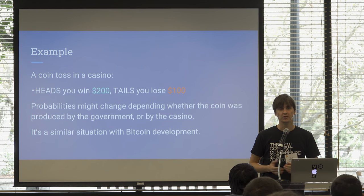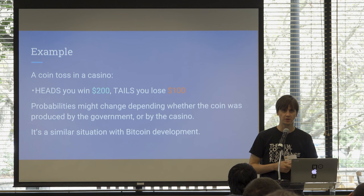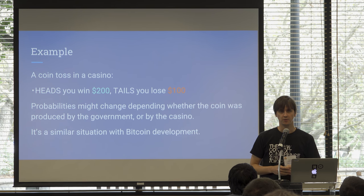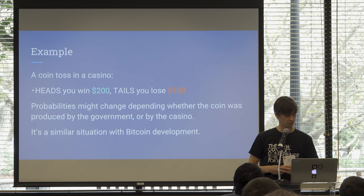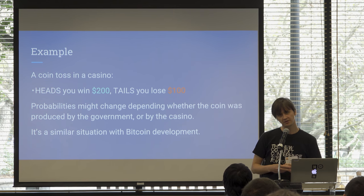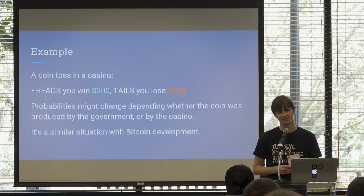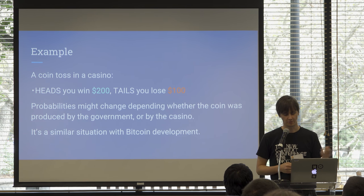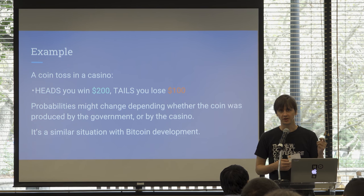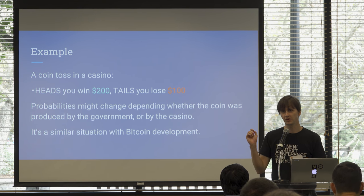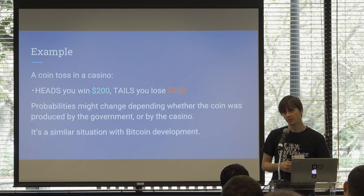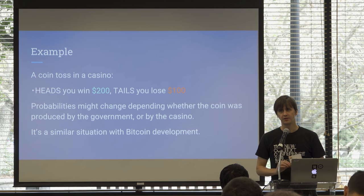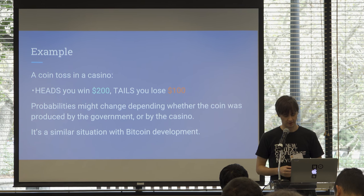Here's an example: we're in a casino and there's a coin toss. Heads gives you $200 and tails gives you $100. It's obviously a good deal — over 100 tosses you'd get heads 50 times and tails 50 times, so you'd make $10,000 and lose $5,000, netting $5,000. But this might change depending on where the coin comes from. A government-issued coin you can trust for 50-50, but a casino-issued coin might give you heads only one-third of the time. Bitcoin development is similar — if you don't understand what people can tweak to make things that seem obvious not be so obvious, you're in deep waters.